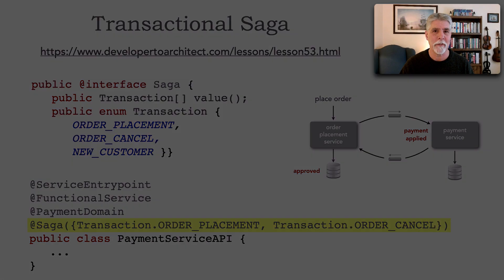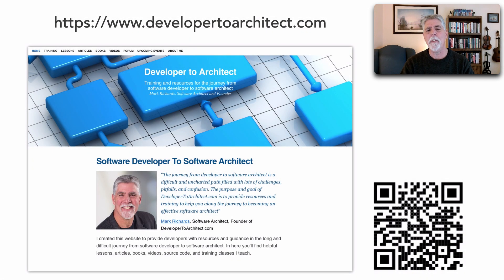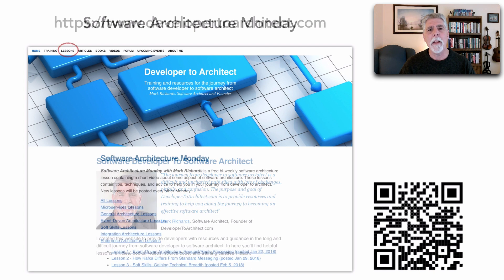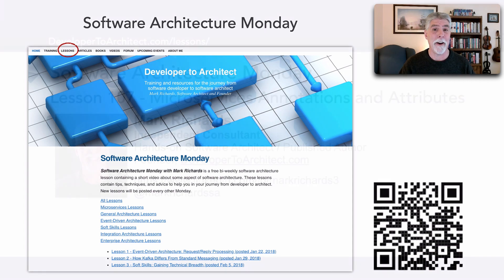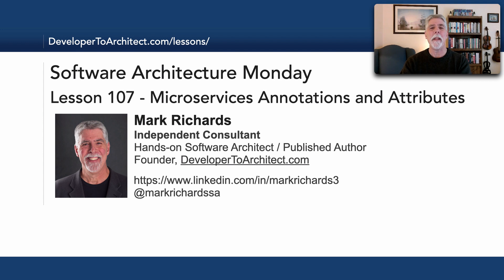Please stay tuned to DeveloperToArchitect.com, where there are lots of resources to help you in the difficult transition from developer to architect and learning about architecture. On Software Architecture Monday, under the lessons link in the menu, you can see all these free videos between five and ten minutes describing some aspect of software architecture. This has been lesson 107: Microservices Annotations and Attributes. Thank you so much for listening, and stay tuned in two weeks for my next lesson.